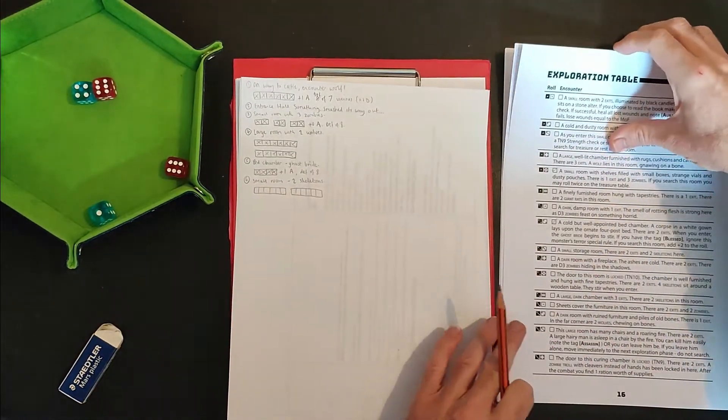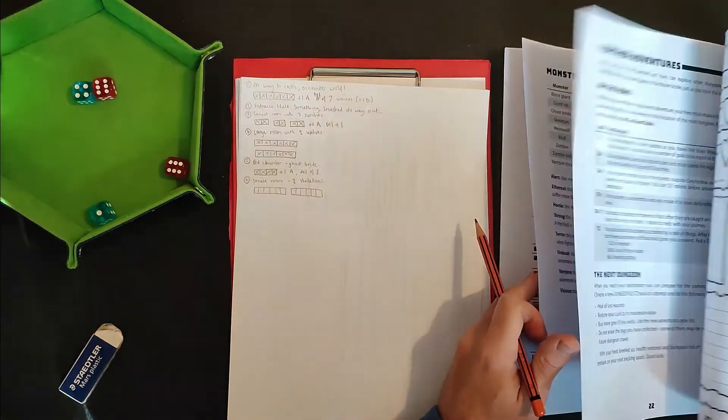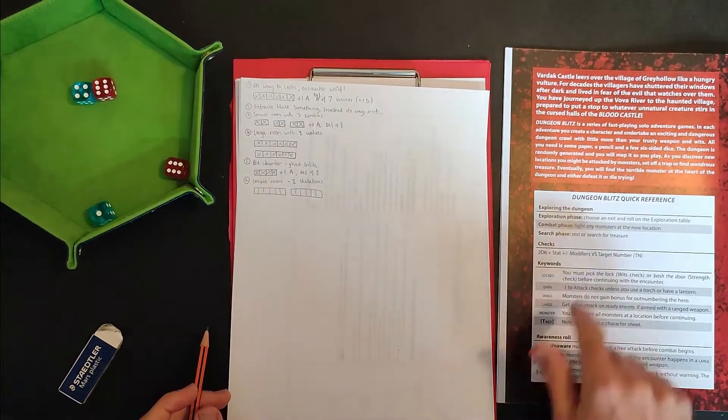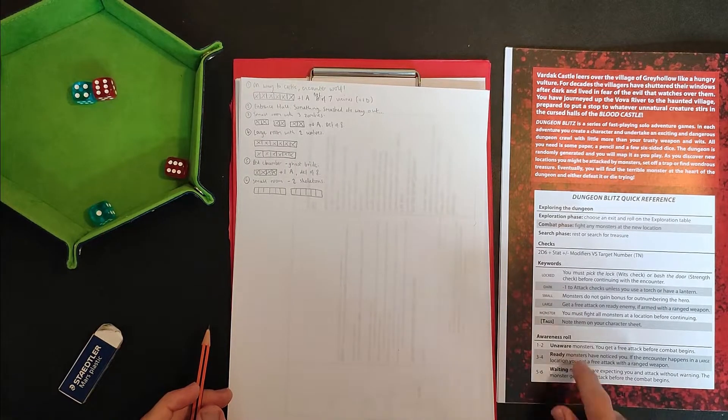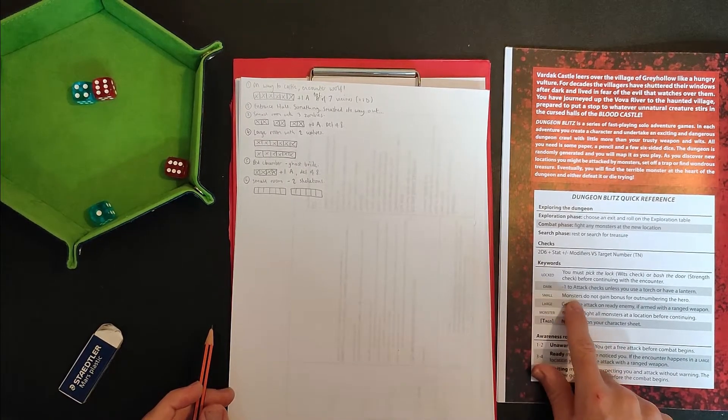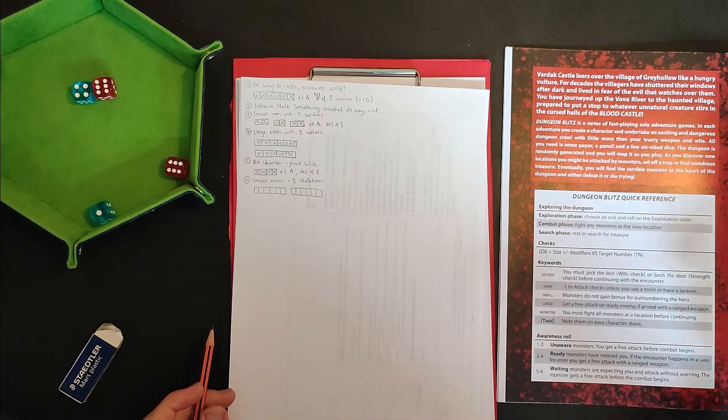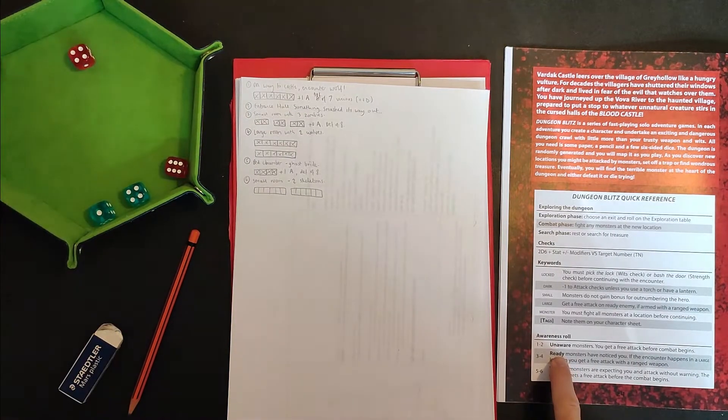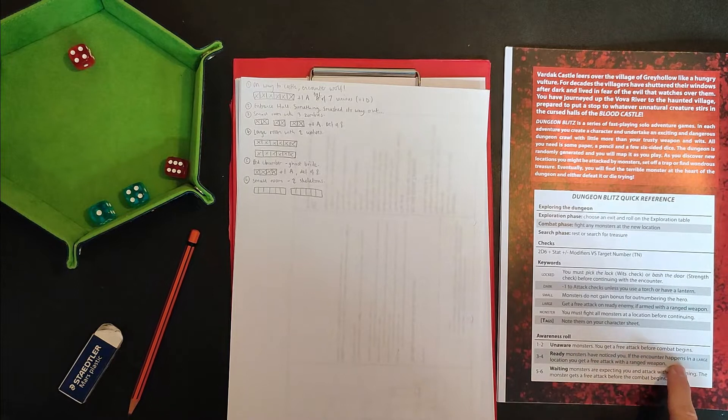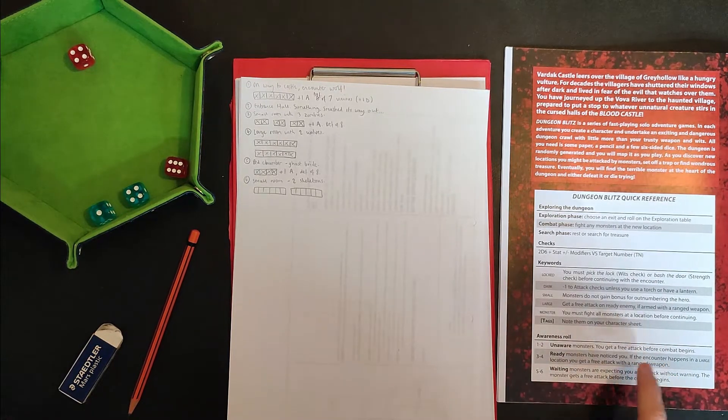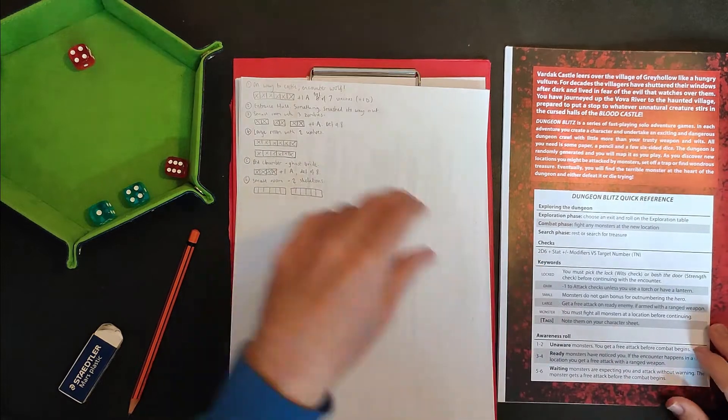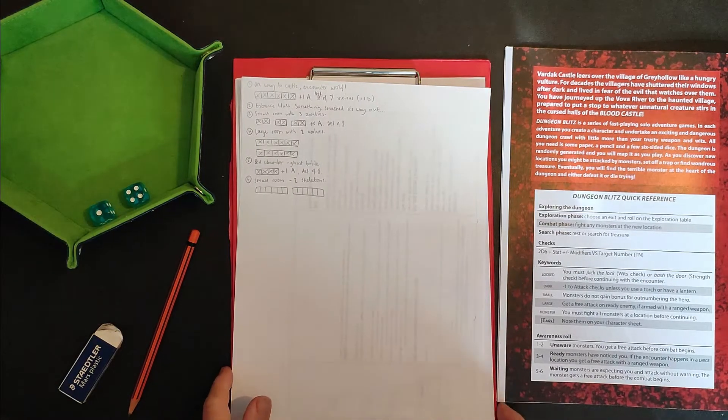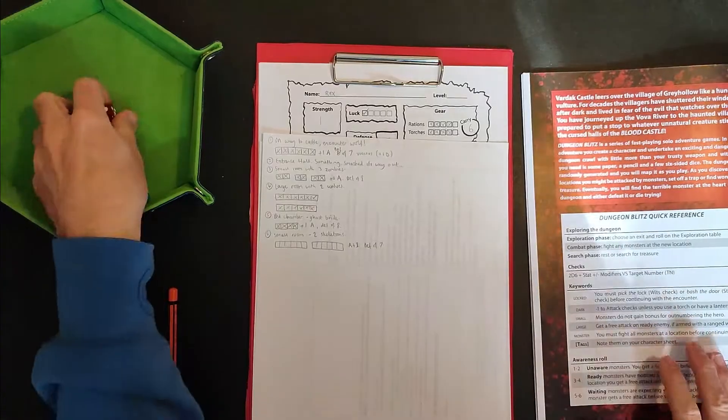So I'm just going to turn to the awareness table. So I just need to look at that. And then we've got, we do on the back, we've got some reminders of things. That's pretty cool. All right. So in a small room, monsters do not gain a bonus for outnumbering the hero. So I need to remember that because we're in a small room. And this is the awareness table. Four. Ready, the monsters have noticed you. So I only get a free attack if I have a ranged weapon and I'm in a large room, neither of which are the case. So we just go into normal combat with me attacking first.